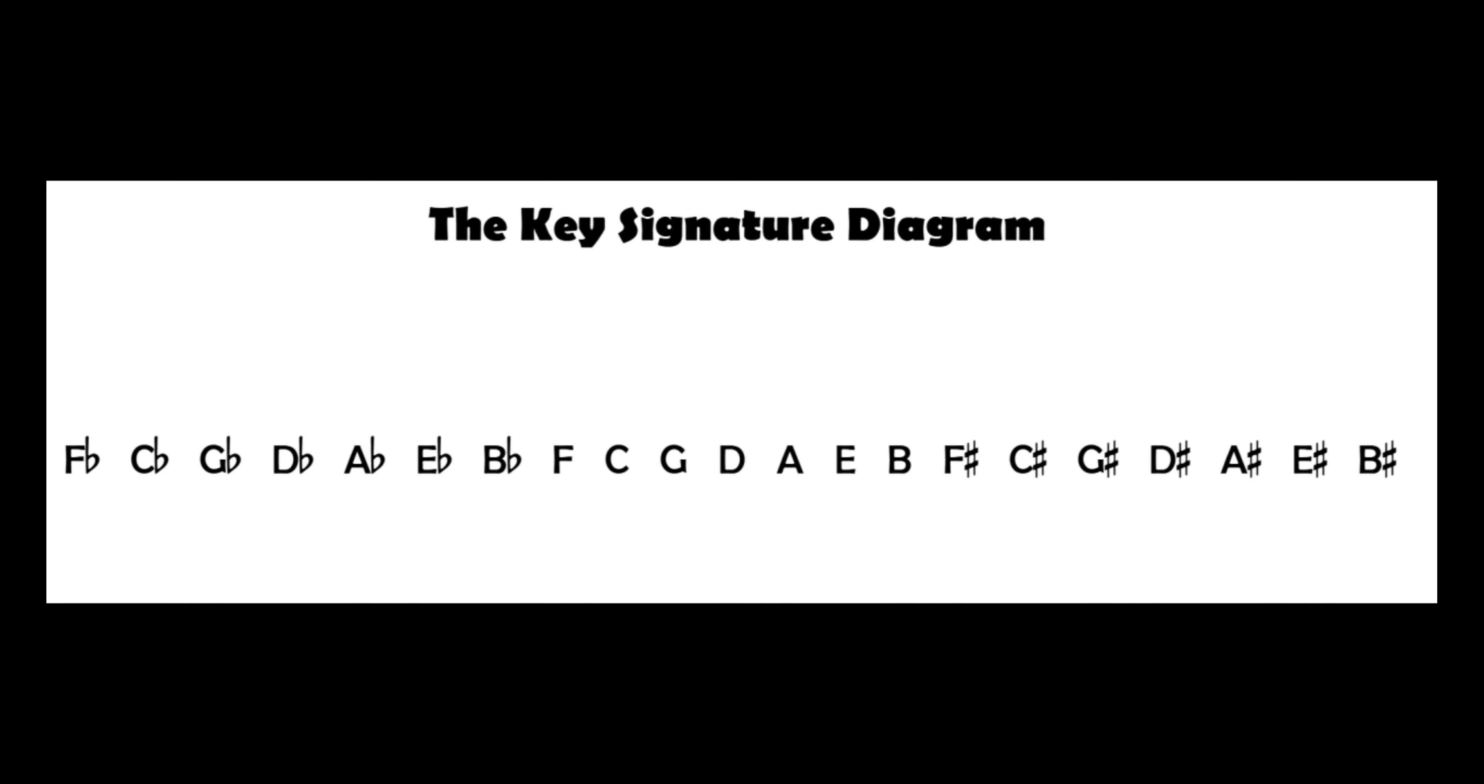C major has no sharps or flats, so write a 0 above C, and write 1 to 7 going both ways from the 0. Check that both the 7's are above C's.